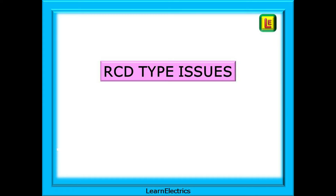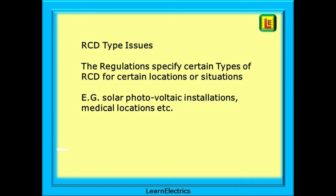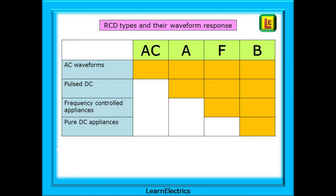This video is about RCDs, so let's look at what issues we might have with different types of RCDs. The regulations specify certain types of RCD for certain locations or situations — for example, solar photovoltaic installations, medical locations, etc. This chart shows the different types of RCD: types AC, A, F or B, and the blue boxes show the different types of waveforms they will monitor and respond to.